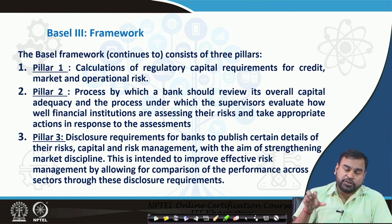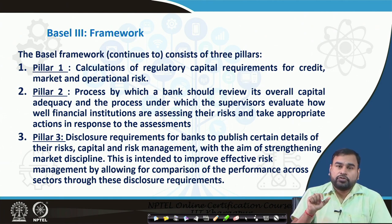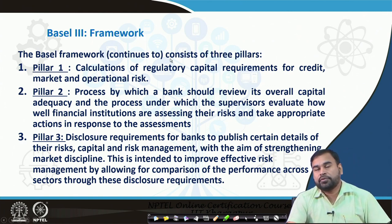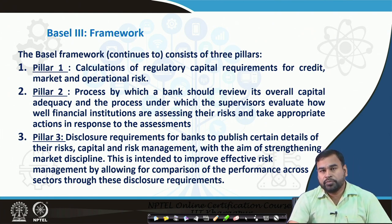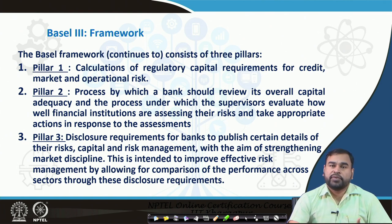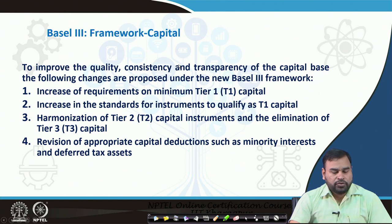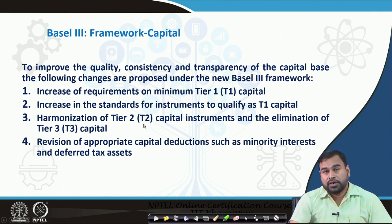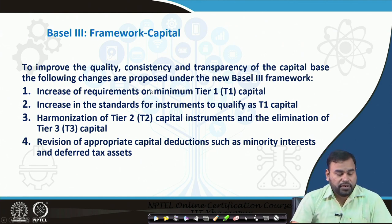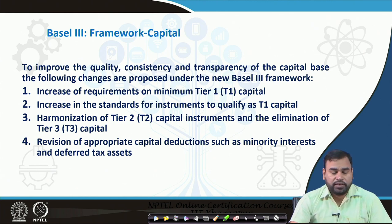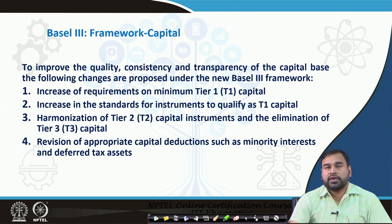Coming back to the basic objective of how capital is regulated under Basel 3: the same philosophy adopted in Basel 2 has been kept, with certain fundamental things intact and certain modifications to make it more robust. The basic objectives were to increase the requirement of minimum tier 1 capital, increase the standards of instruments to qualify as tier 1 capital, harmonize tier 2 capital instruments, and eliminate tier 3 — Basel 3 has recommended there is no need for tier 3 capital.